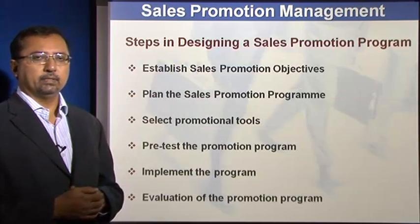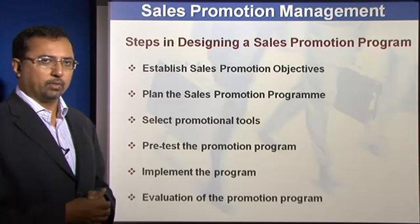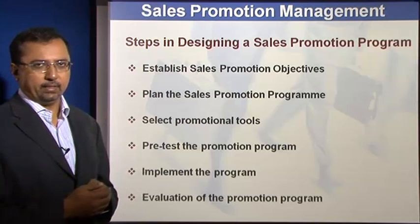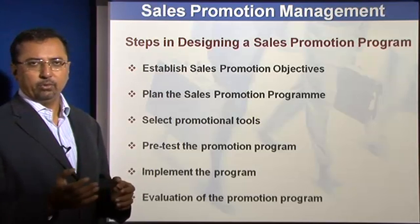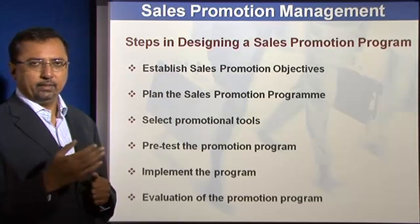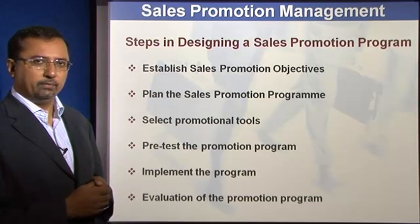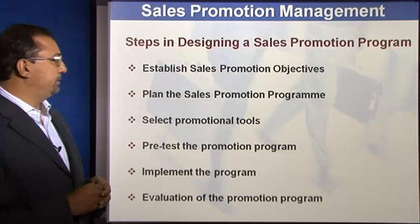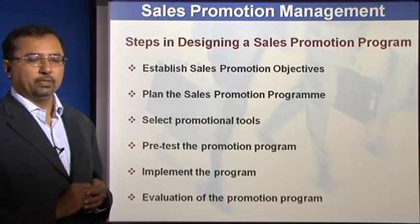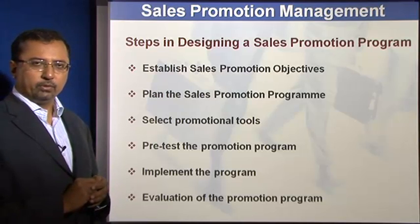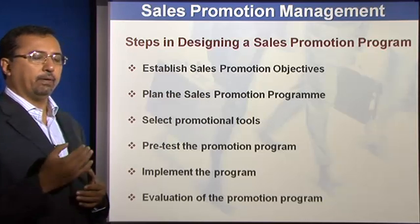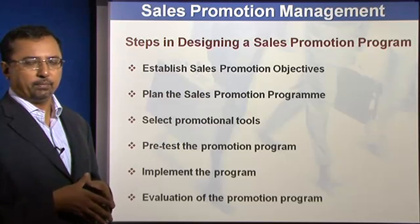How does one go about establishing and setting up a sales promotion program? First and foremost, as in many other things, the first step is to set the objectives — because if you do not know where you are going, any place will take you there. So first is to establish the objectives. The second is to do the planning for the program. Third is to figure out which specific tools are important. Fourth is to pre-test the program if necessary, then implement it, and then evaluate — get feedback and measure the effectiveness of that program.